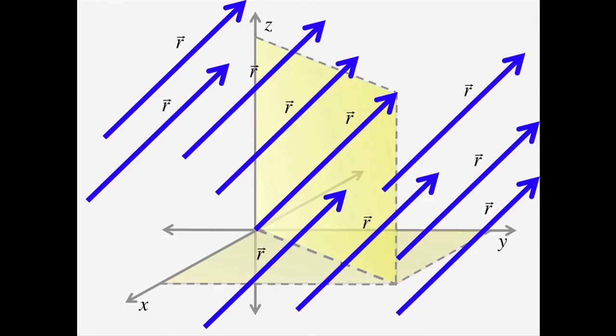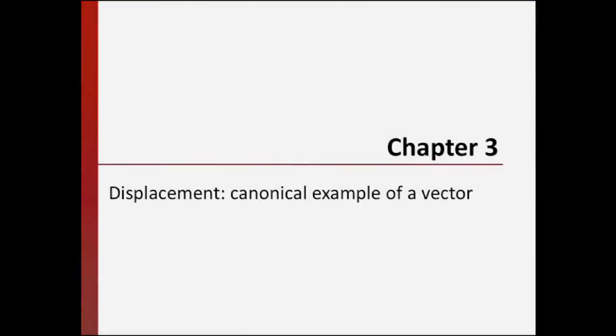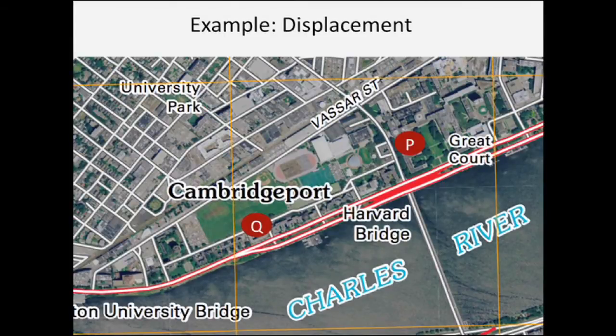To make this seem less abstract, we can think of vector properties in terms of displacement. Suppose you walk from point P into a point Q. The displacement or change of position is from P to Q. It is aptly represented by an arrow that starts at the point P and ends at the point Q.